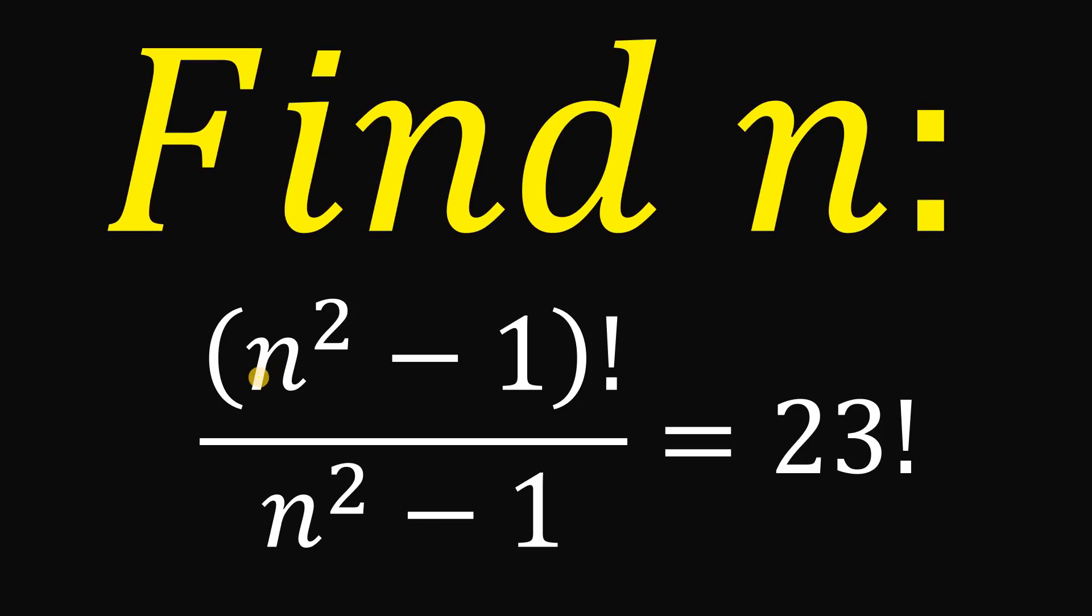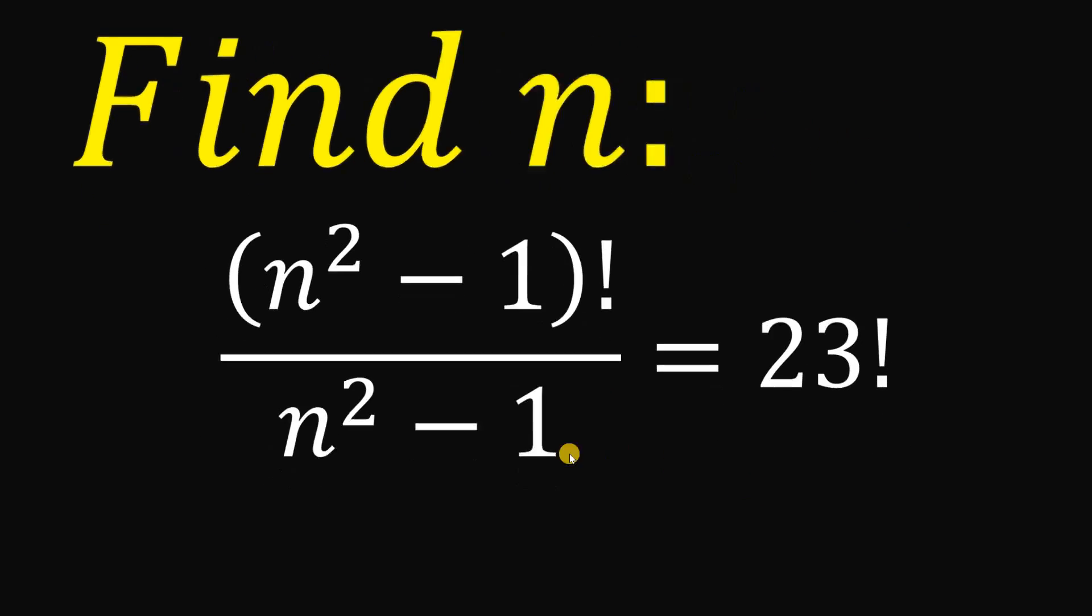Find the value of n given this equation: n squared minus 1 factorial all over n squared minus 1 equals 23 factorial. Now you can pause this video if you want to give this problem a try. Now suppose you pause this video. Now let's see if you got the correct answer.